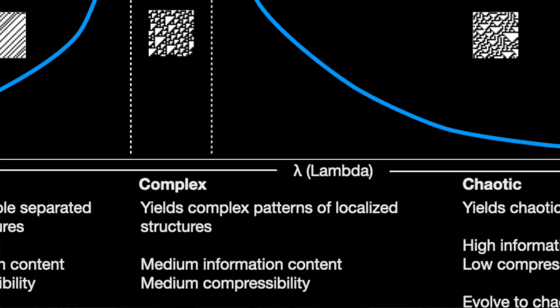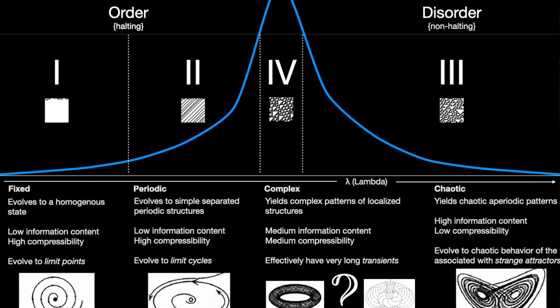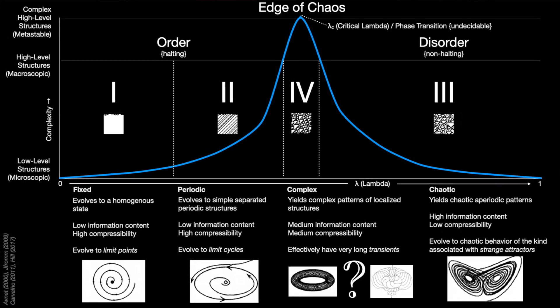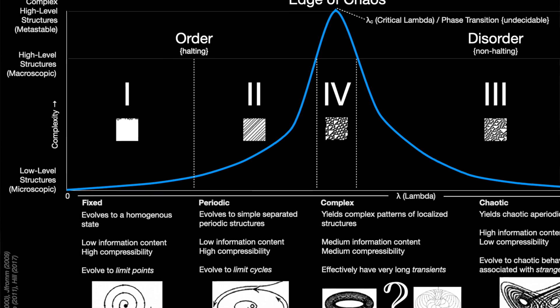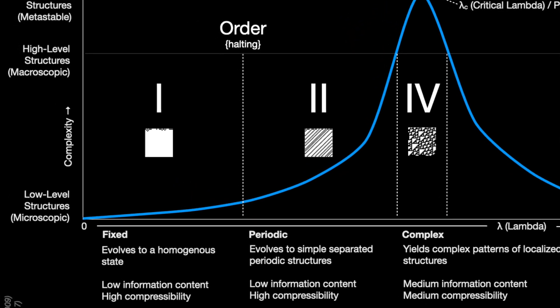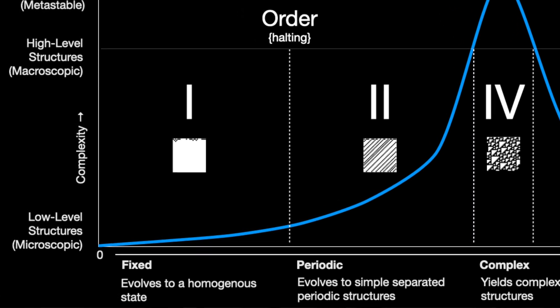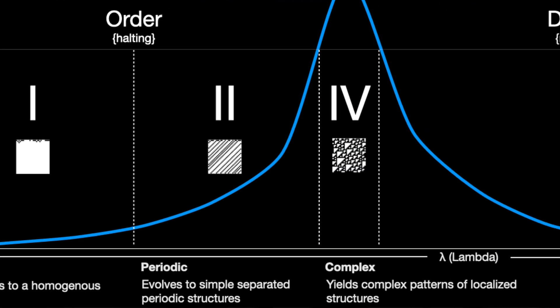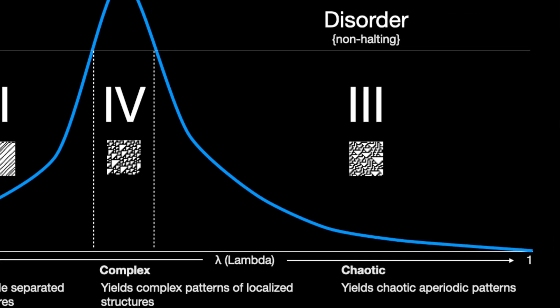Lambda maps well onto Stephen Wolfram's four-stage classification for cellular automata. Class 1 are the lowest lambdas, evolving to homogenous states. Class 2 are intermediate lambdas, evolving to simple, separated, periodic structures — more interesting than class 1, but still outside the edge of chaos. Class 3 are the highest lambdas, yielding chaotic, aperiodic patterns.